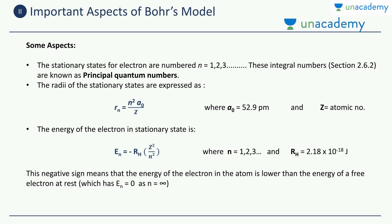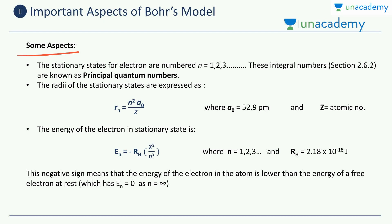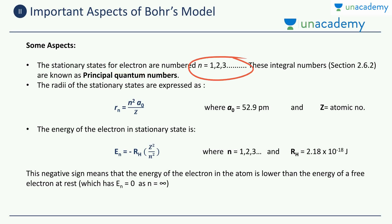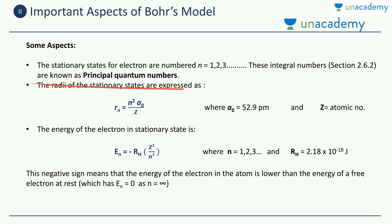Let us look at some important aspects of Bohr's model. The first aspect is that the stationary states of an electron are numbered from n=1 to infinity — there can be many different orbits. These integral numbers are known as principal quantum numbers.